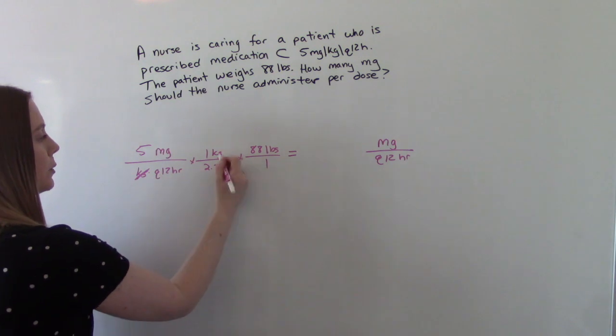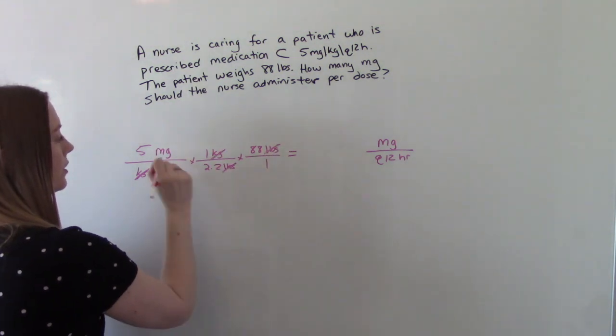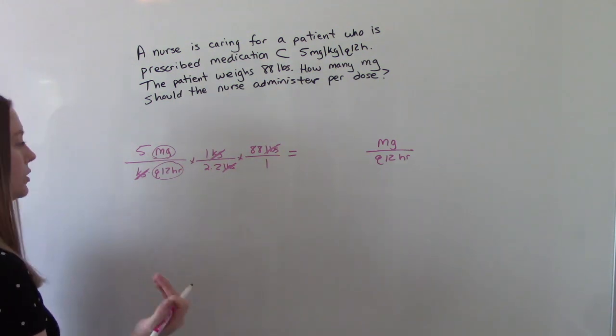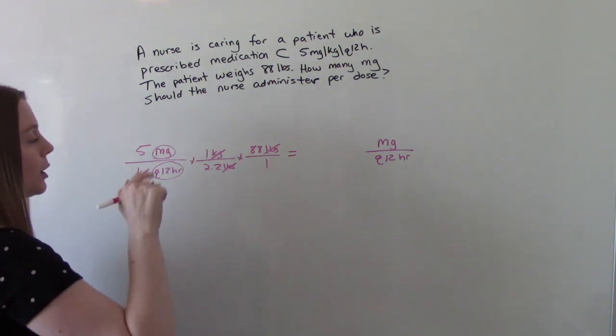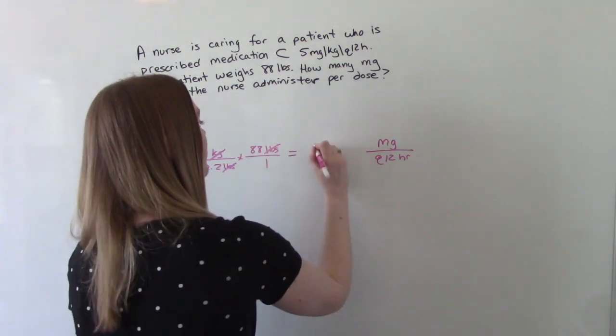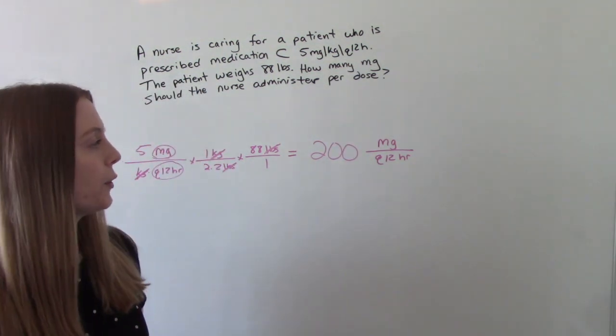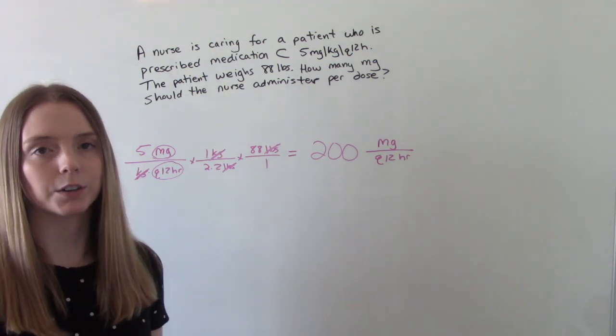So our kilograms will cancel, our pounds will cancel, that will leave us with milligrams on top, and then our dose, which is Q12 on the bottom. Put it in your calculator, do the math, and you get 200. So the patient is going to receive 200 mg every 12 hours.